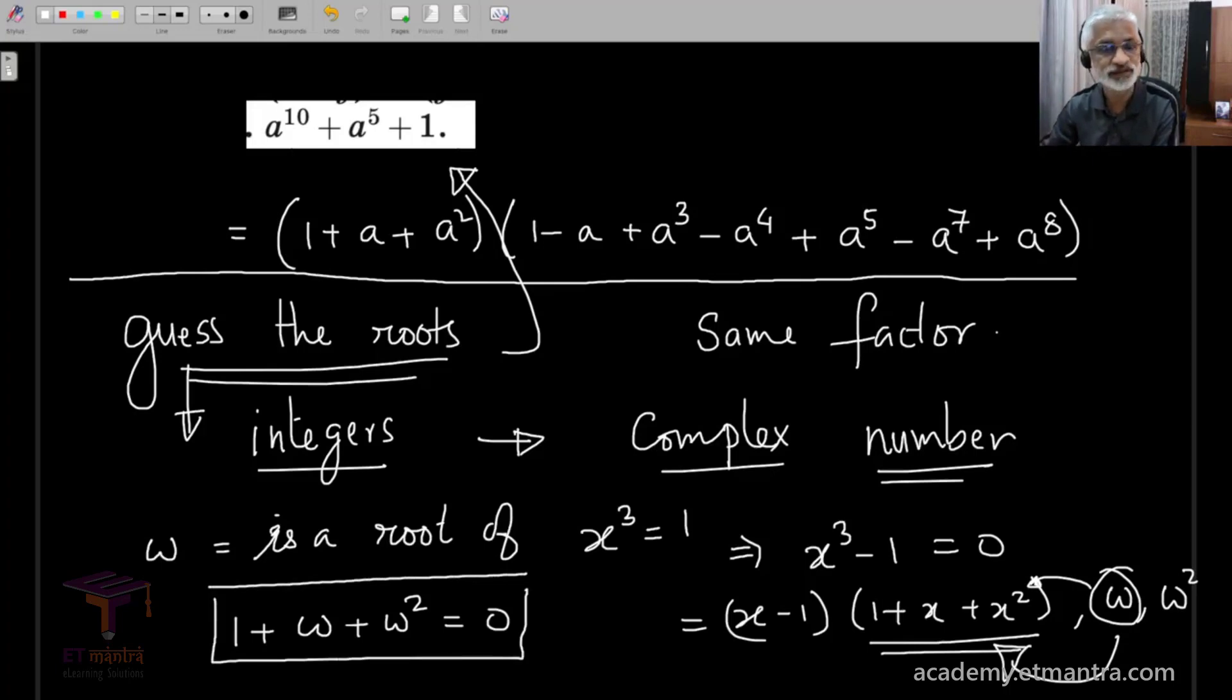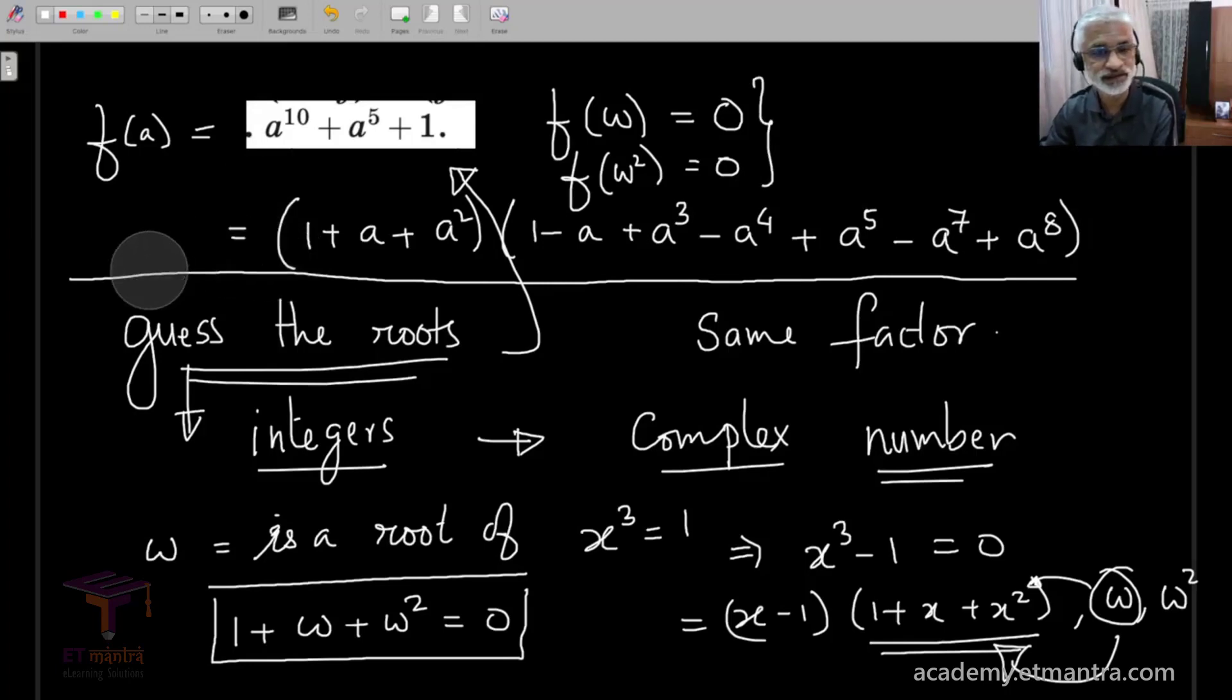Now, it turns out that omega, so let's call this as a polynomial of a, it turns out that f of omega is actually going to be equal to 0. So, once you realize that, and similarly, f of omega square will also be 0, which means that omega and omega square, the complex numbers satisfy this equation. And if we can prove these two, what does that mean? It just means that